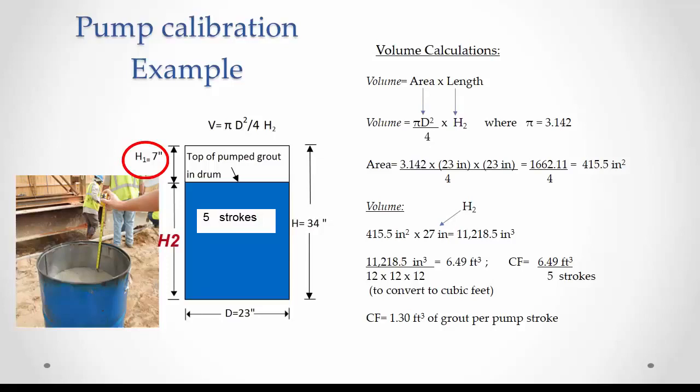Now, he can determine H sub 2 equals 34 minus 7 inches equals 27 inches.